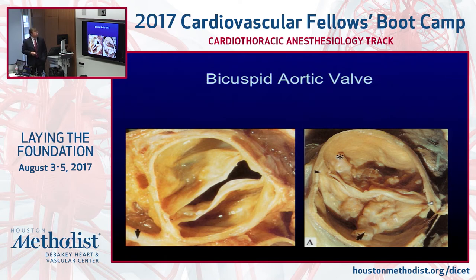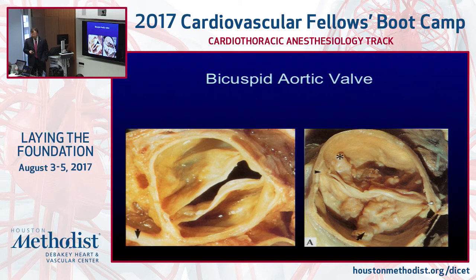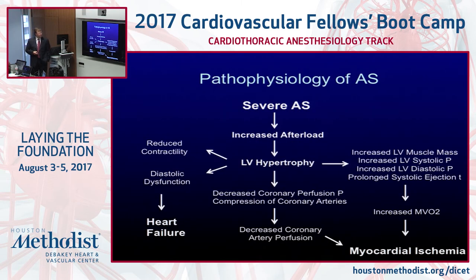Part of the problem with the bicuspid valve is its irregular shape. With two leaflets instead of three, the opening area is smaller and you get turbulent flow. Ultimately the leaflets begin to fibrose and then calcify with calcium buildup. By the time patients are in their fourth and fifth decades, most start to develop aortic stenosis. This is the pathophysiology of aortic stenosis.